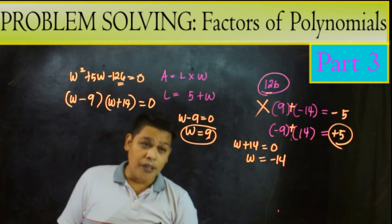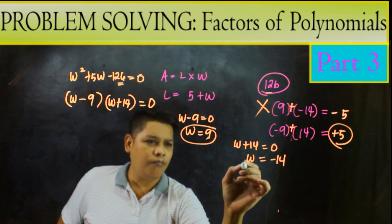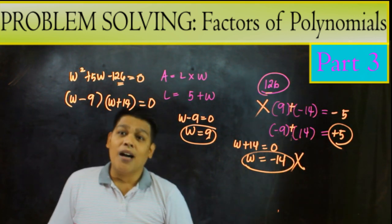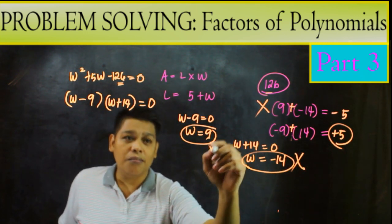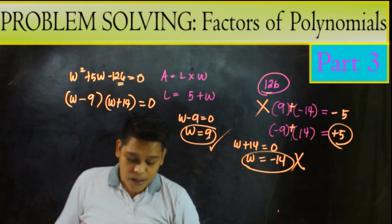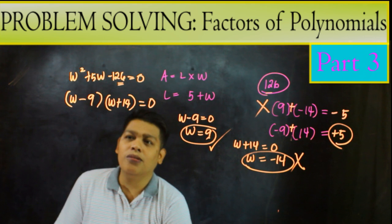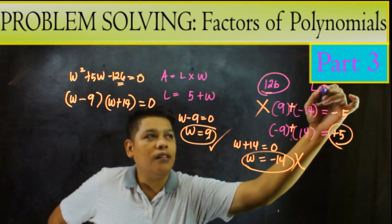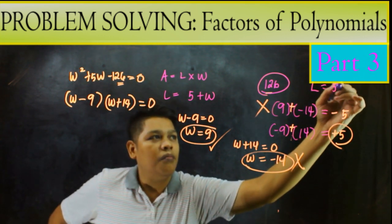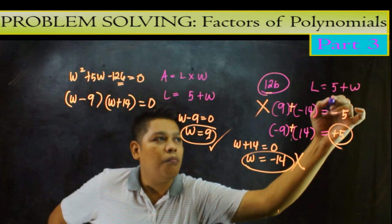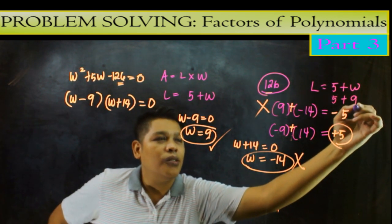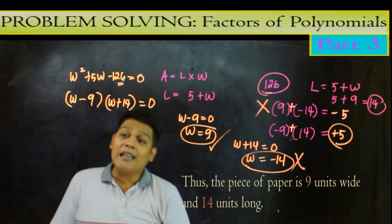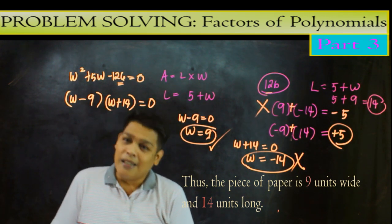That is a 0 property. And then, dahil, isa is negative, isa is positive. Ididisregard natin yung negative. Ang kukunin lang natin is positive kasi wala namang mesyong negative. So ibig sabihin, ang ating W, ang W natin is 9. Ngayon, ang L natin, yung L natin is 5 plus W or 5 plus 9. So yan ay 14. So 14 yung ating length. And ang width naman natin is 9.